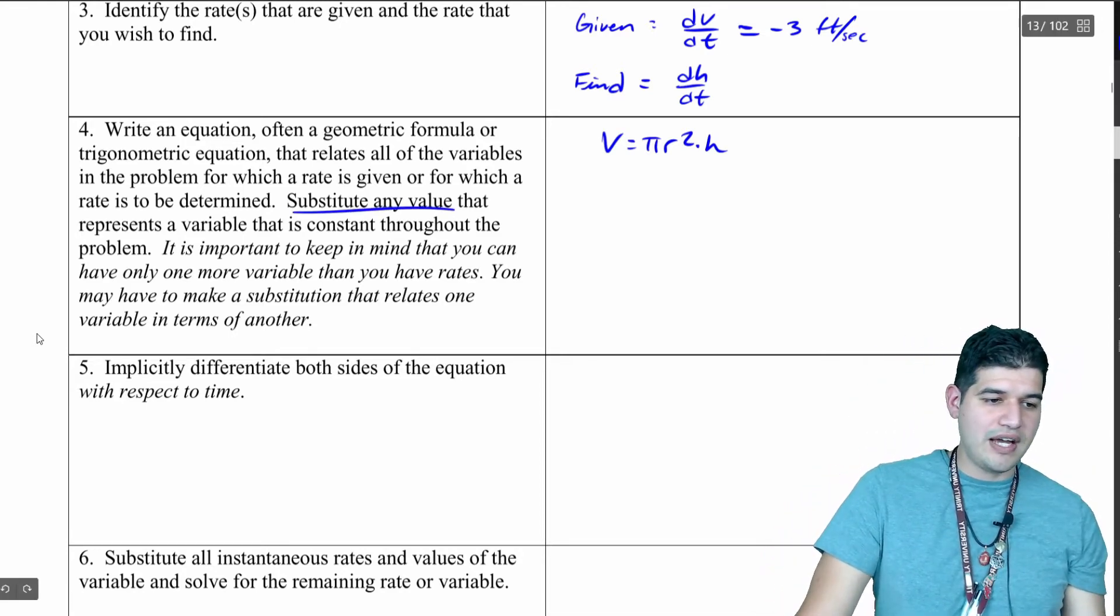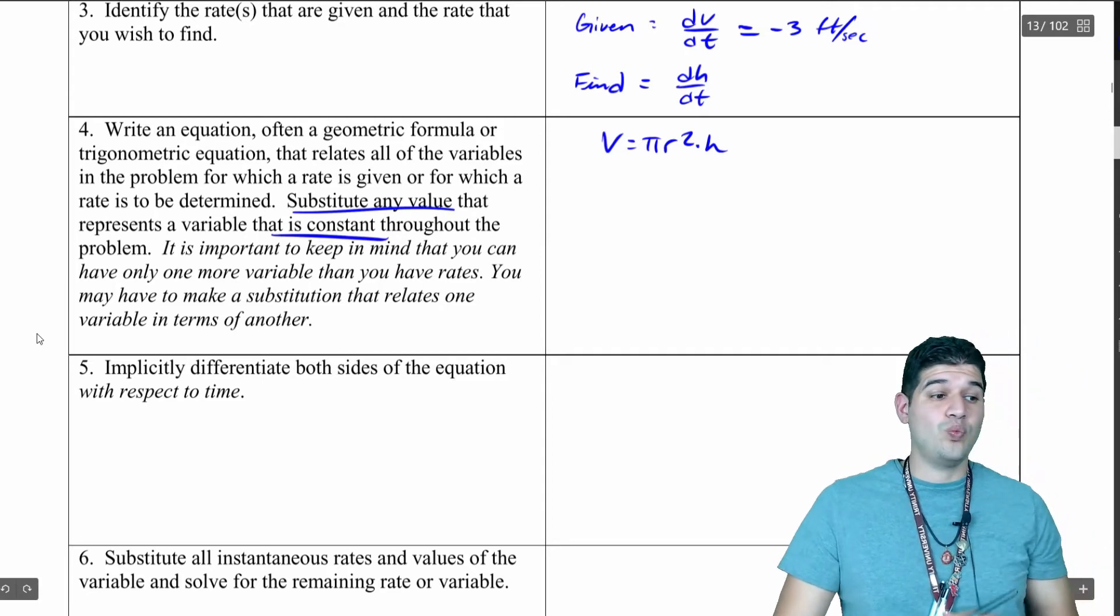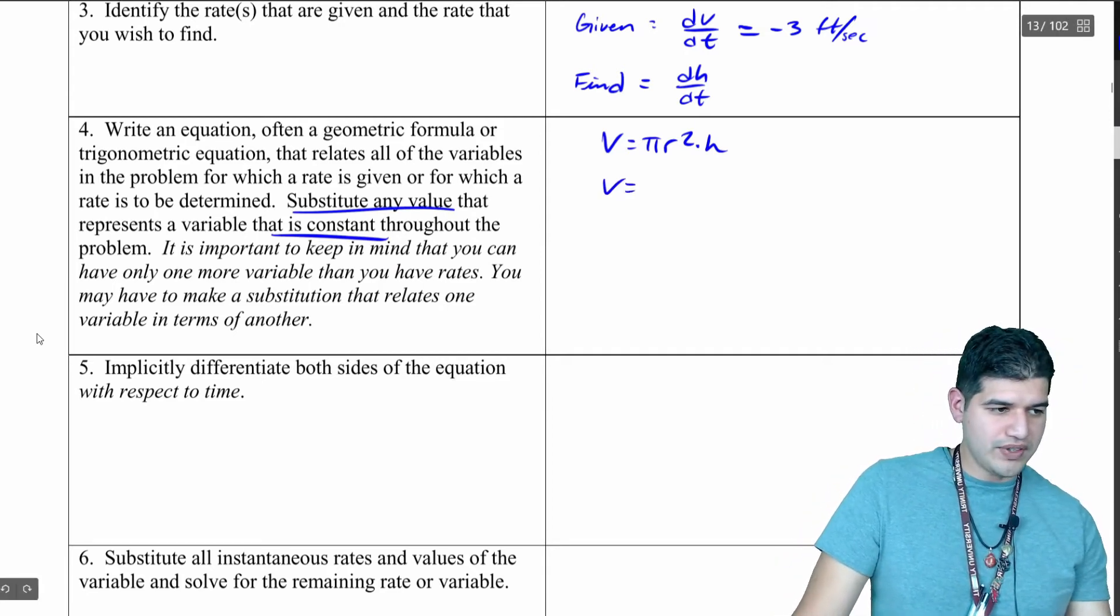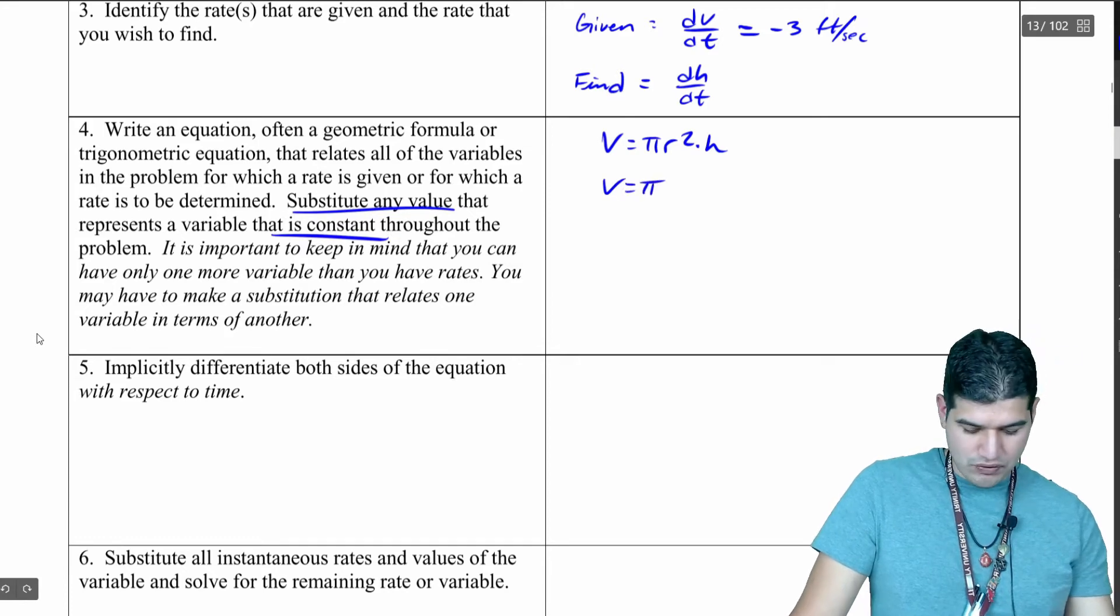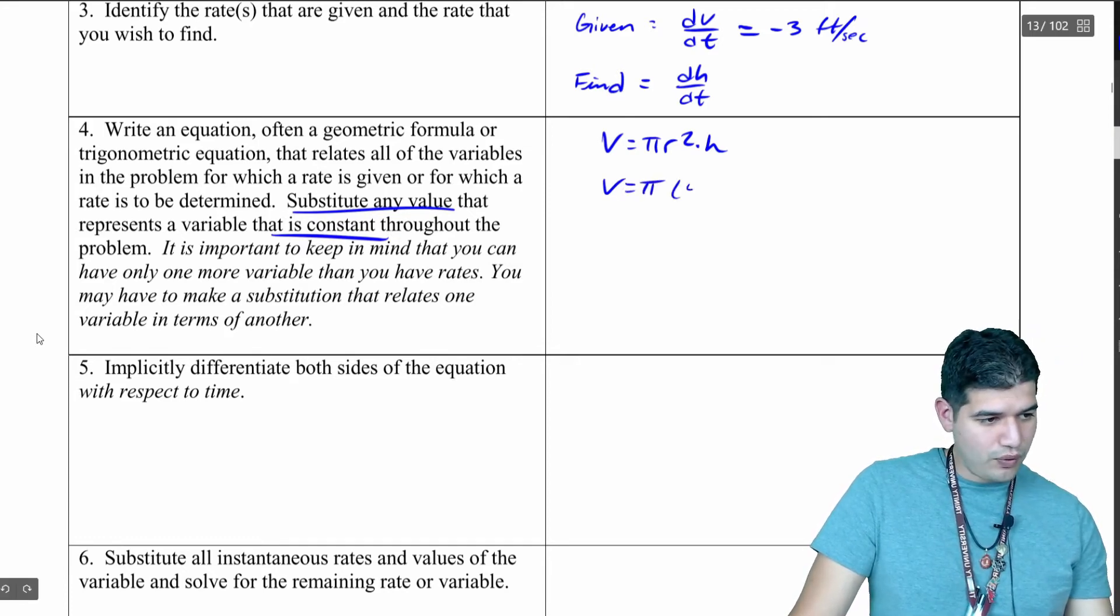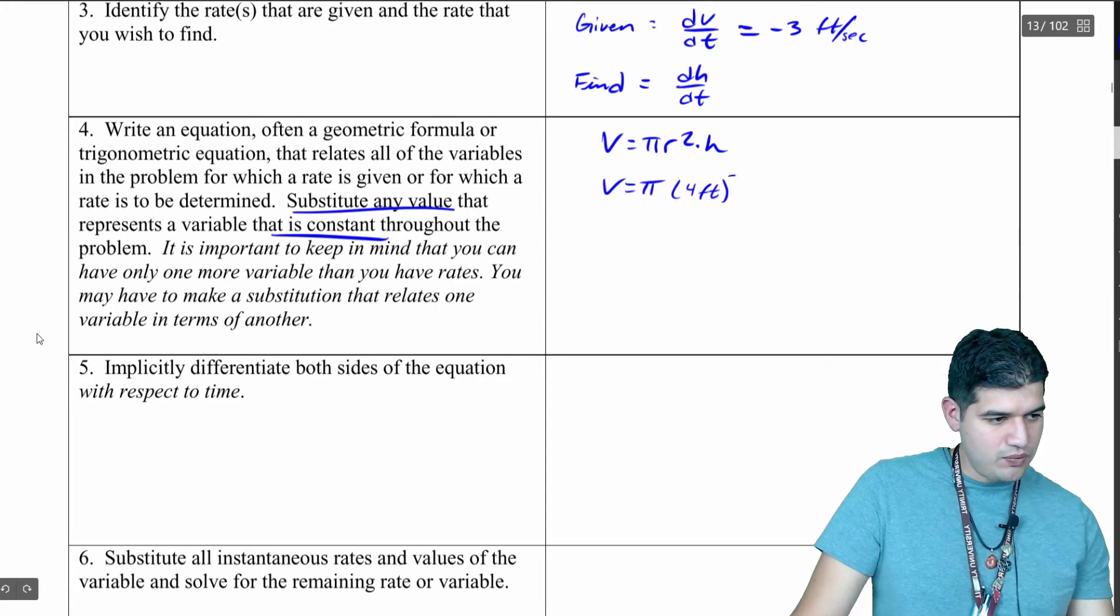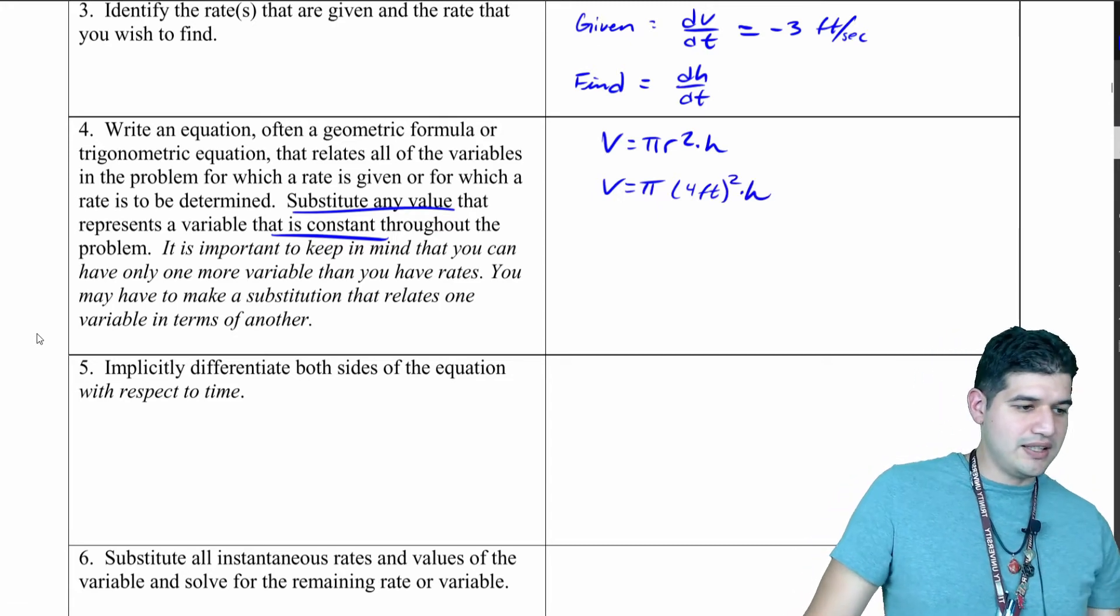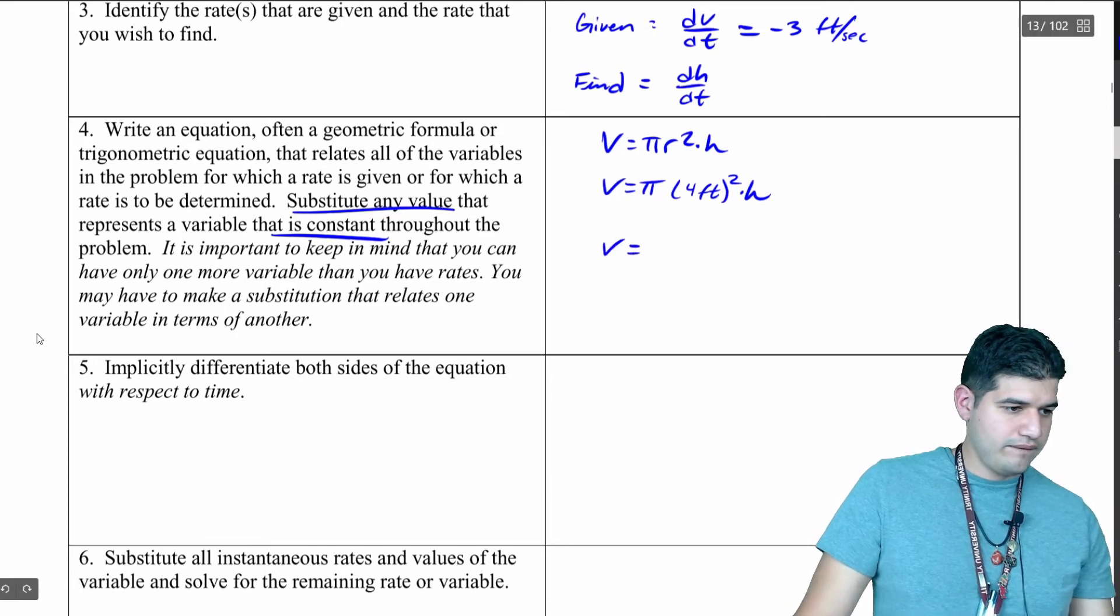I'm going to go V equals π, now my radius is going to be four feet and we're going to square it, and then we're multiplying by the height still.